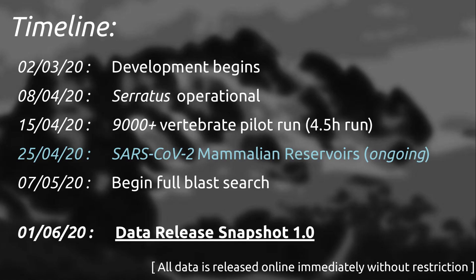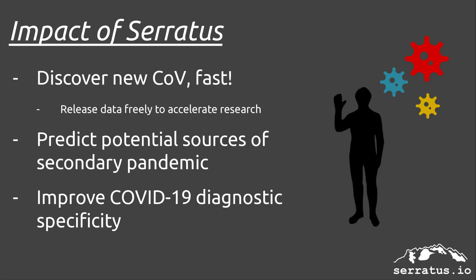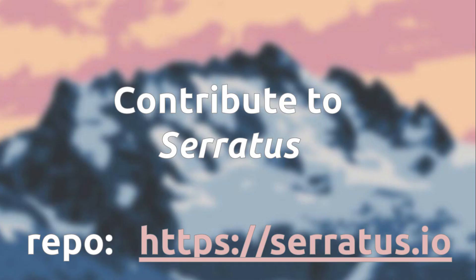We are currently on track for a July 1st completion date of this analysis. Our goal is to create a free scientific resource of coronavirus sequences, which can help predict secondary pandemics, improve the specificity of current PCR diagnostic tests, and help the research community. Serratus is a collaborative, open science project. We welcome scientists and developers to come on board and help us fight this pandemic. Thank you.